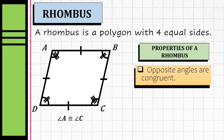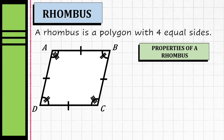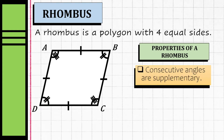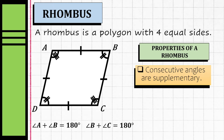Let's talk about the angles of a rhombus. According to its properties, opposite angles are congruent, so we can say that angle A is congruent to angle C, and angle B is congruent to angle D. The consecutive angles are supplementary, so if you add angle A and angle B it is equal to 180 degrees, and angle B and angle C will also sum to 180 degrees.